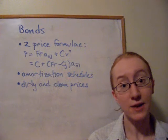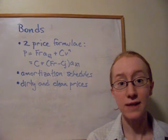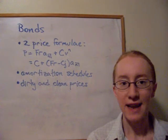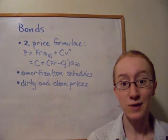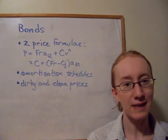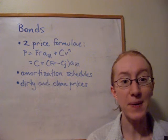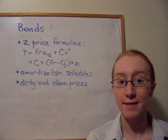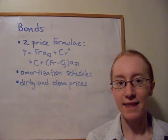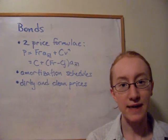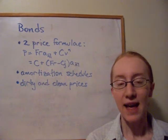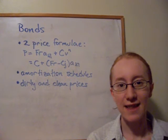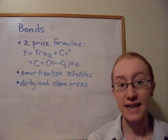If P and C are equal to each other, the bond is sold at par. If P is greater than C — meaning we're paying more for the bond than we'll get back at redemption — the bond is priced at a premium. And if P is less than C, then the bond is priced at a discount.